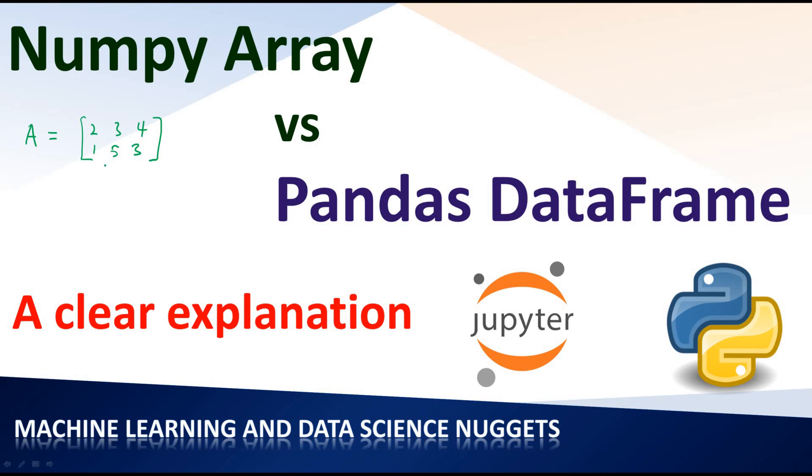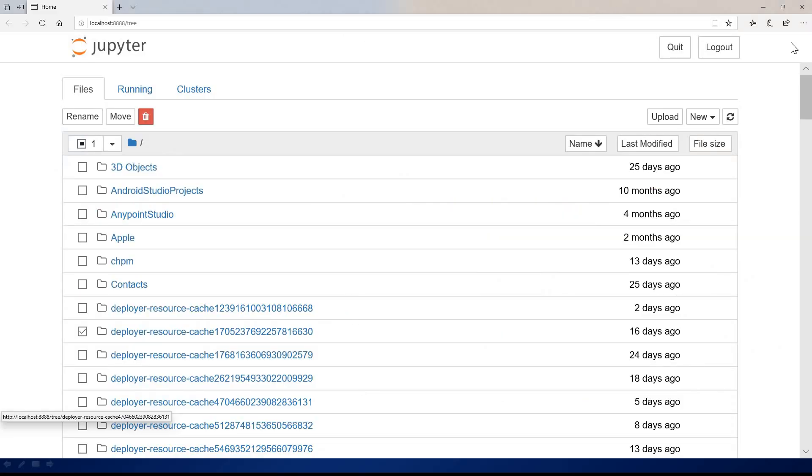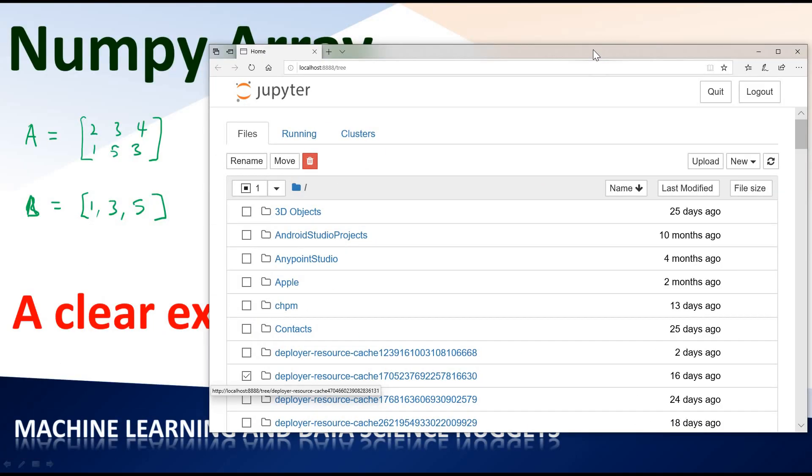A NumPy array can be any dimension, maybe one dimension or two dimensions. You can also have a NumPy array B equal to 1, 3, 5. This is also a NumPy array. We are going to create it immediately. We are going to use Jupyter Notebook to show how these things work.